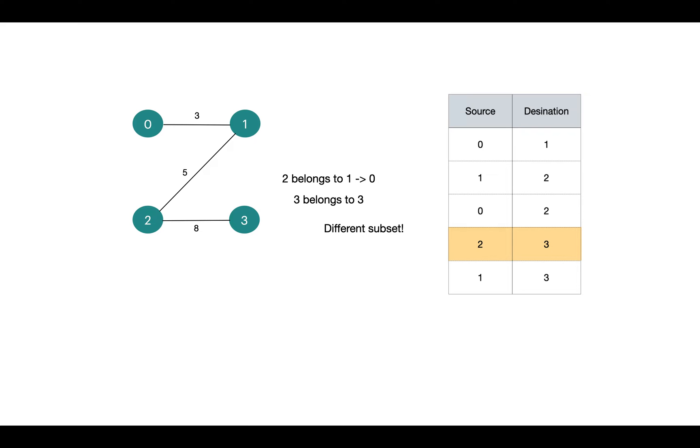Let's get into the details. In this graph, we first consider each vertex in different subsets and start processing all the edges one by one. To keep track of all the subsets, we take an array. Basically we'll store the parent vertex for each vertex in this array, and initially we take the vertex itself as its parent, indicating there is only one item in the subset.